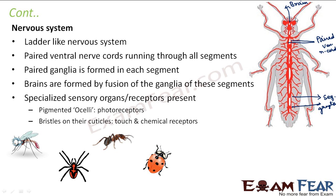Specialized sensory organs are also present. Pigmented ocelli, which are the photoreceptors, are present here — the eye-like structures. Bristles are also present on their cuticles, which are touch and chemical receptors. Their body surface is covered by cuticle, and on that cuticle you have small bristle-like structures that are sensitive to touch and chemicals. Here you can see why it is a ladder-like structure — two ventral nerve cords with segmental ganglia joined in the middle, giving a ladder-like appearance.